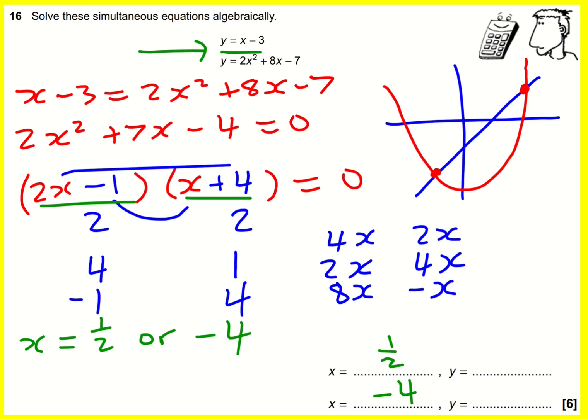So here we've got x minus 3. So when x is a half, it's going to be a half minus 3, it's going to be minus two and a half, minus 2.5, whichever you prefer. And then when I put in minus 4, it's going to be minus 4 minus 3, which is minus 7.